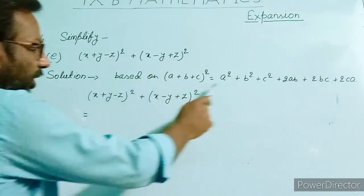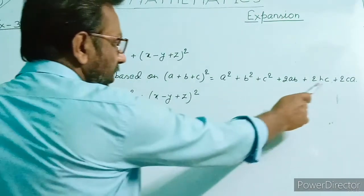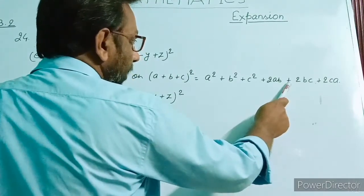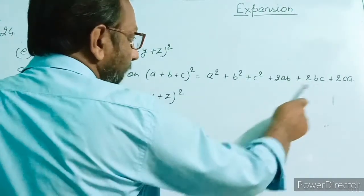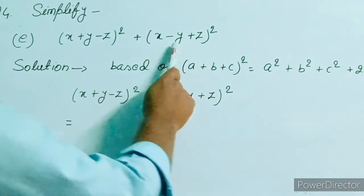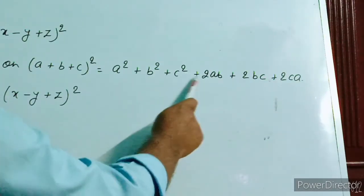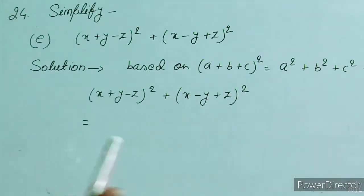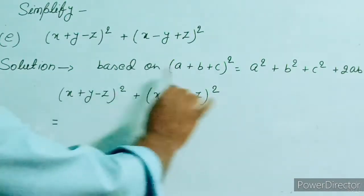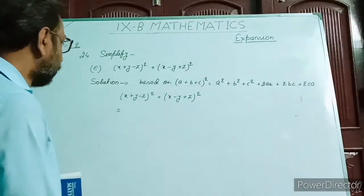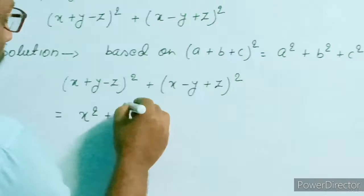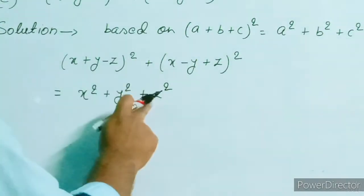Wherever minus z comes, it comes at the place of c. When c is negative, the term +2bc becomes -2bc, and +2ca becomes -2ca. Similarly, wherever minus b appears, we write -2ab and -2bc. So we can solve this question using only one formula without needing two separate ones. We start with x² + y² + z² — since it is (-z)², that gives +z² — and now for the cross terms.